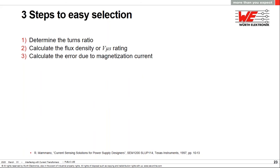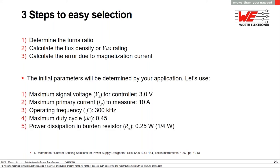So how do we go about selecting your current transformer for your application? There are actually three steps that you can take. I'll go through an example in a detailed summary. Number one is to determine the turns ratio that you need. Number two is to calculate the flux density or the volt microseconds, and number three is to calculate the error due to magnetizing current. Before you can start, you have to have some basic information from your application. For this example, let's use the following parameters. Maximum signal voltage that we want is 3 volts, maximum current to measure is 10 amps, the operating frequency is 300 kilohertz, a maximum duty cycle of 0.45, and ideally the burden resistor not to dissipate more than one quarter of a watt.